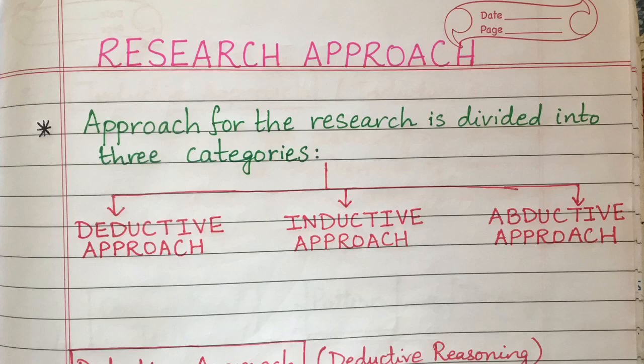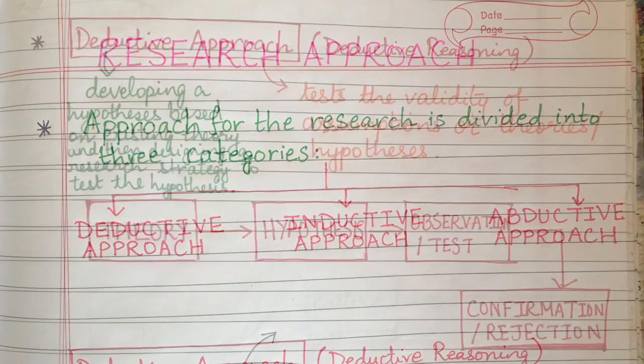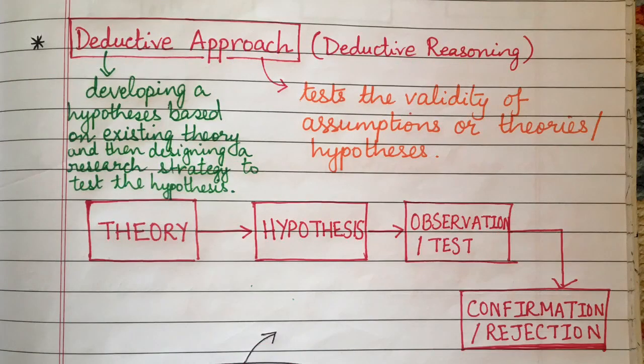Abductive research starts with some very surprising fact or puzzle, and the research process is devoted to explaining what that surprising fact or puzzle is. Now let's understand the deductive approach a little more.